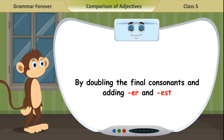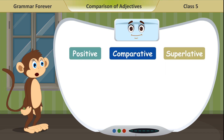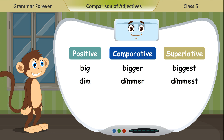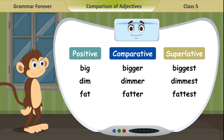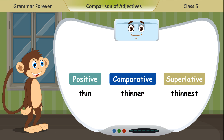By doubling the final consonant and adding -ER and -EST: Big, bigger, biggest. Dim, dimmer, dimmest. Fat, fatter, fattest. Hot, hotter, hottest. Thin, thinner, thinnest.